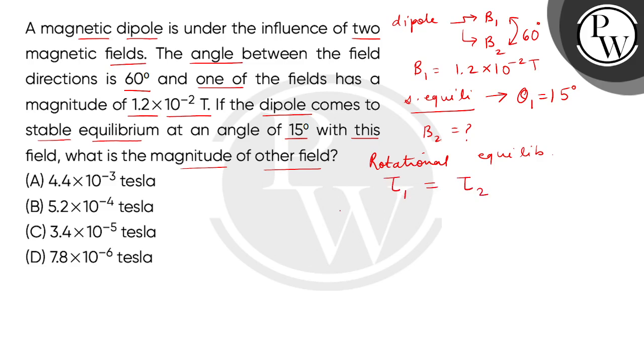We can write torque generally for the dipole: M·B1·sin(θ1) for the first and M·B2·sin(θ2) for the second torque. Since the magnetic dipole is fixed, the dipole moment M is constant in both cases, so M cancels out. We get B2 = B1·sin(θ1)/sin(θ2).